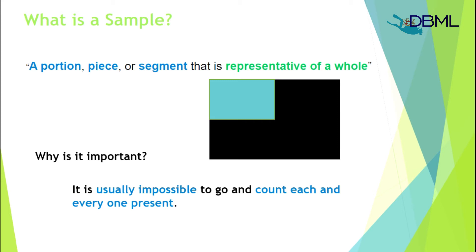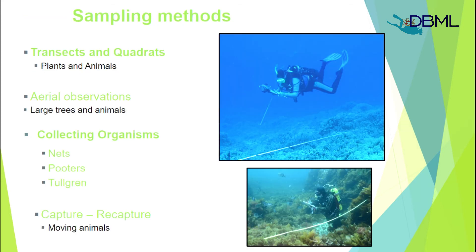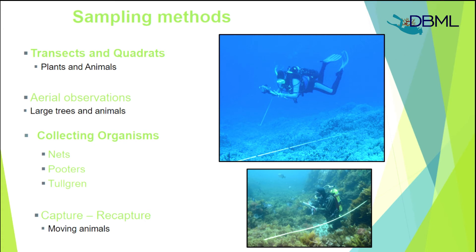The sampling methods we'll look at today include transects and quadrats, mainly used for plants and animals. There are other methods such as aerial observations, used to identify and survey large trees and animals. We'll also look at collecting organisms using different techniques that minimise disturbance — nets, pooters, pitfall traps, and we'll make slight reference to capture-recapture techniques as well.